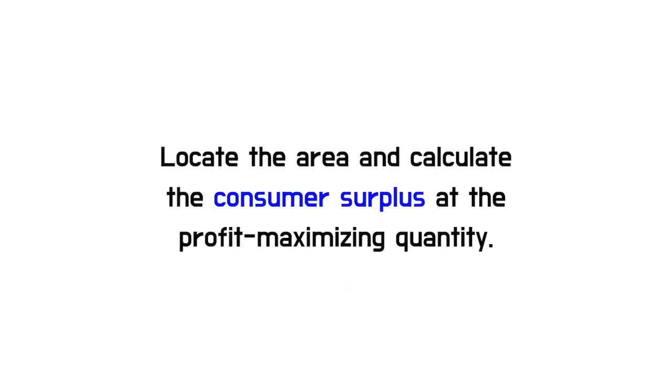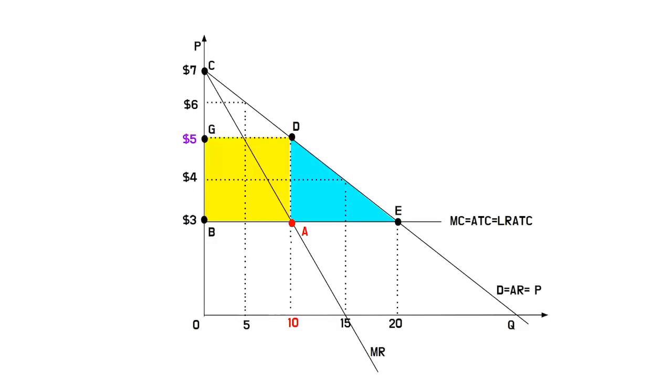Fifth, now let's find the area of consumer surplus at the profit-maximizing quantity. The CS would be $10, which is the area of CGD colored in pink.